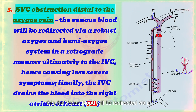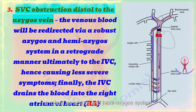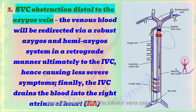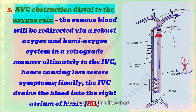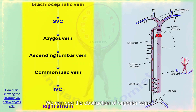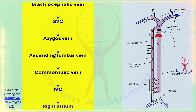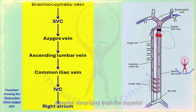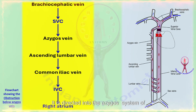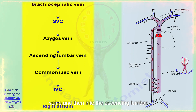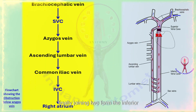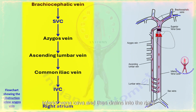The third type is obstruction of the superior vena cava distal to the azygos vein. In this type, venous blood is redirected via a robust azygos and hemi-azygos system in a retrograde manner, ultimately into the inferior vena cava, hence causing less severe symptoms, and finally the inferior vena cava drains the blood into the right atrium. The venous blood is collected through the brachiocephalic vein into the superior vena cava, then directed into the azygos system of veins, then into the ascending lumbar vein, and collected into the common iliac veins, which join to form the inferior vena cava.